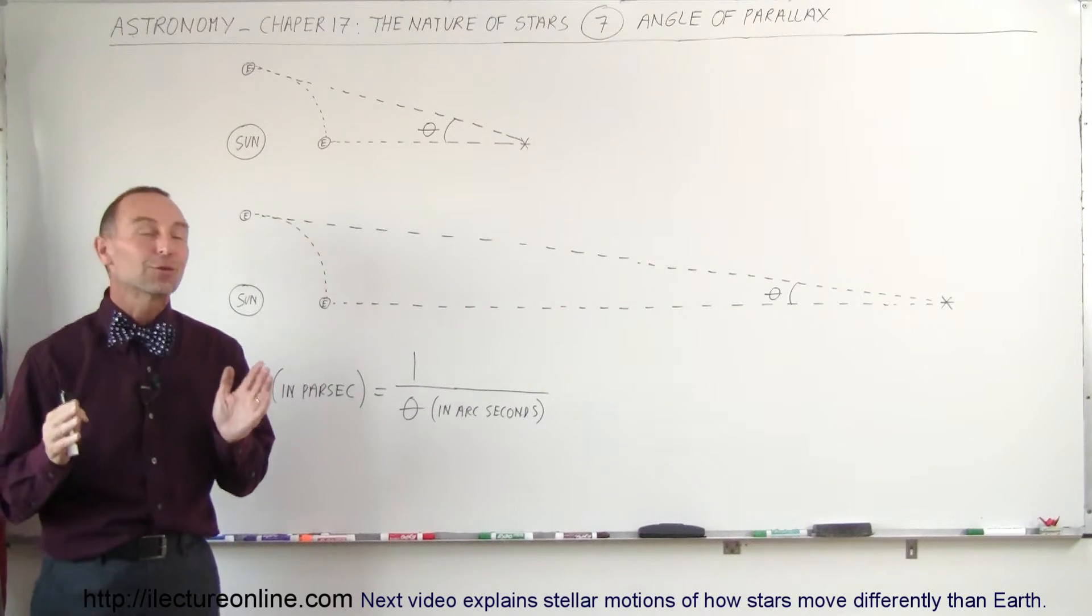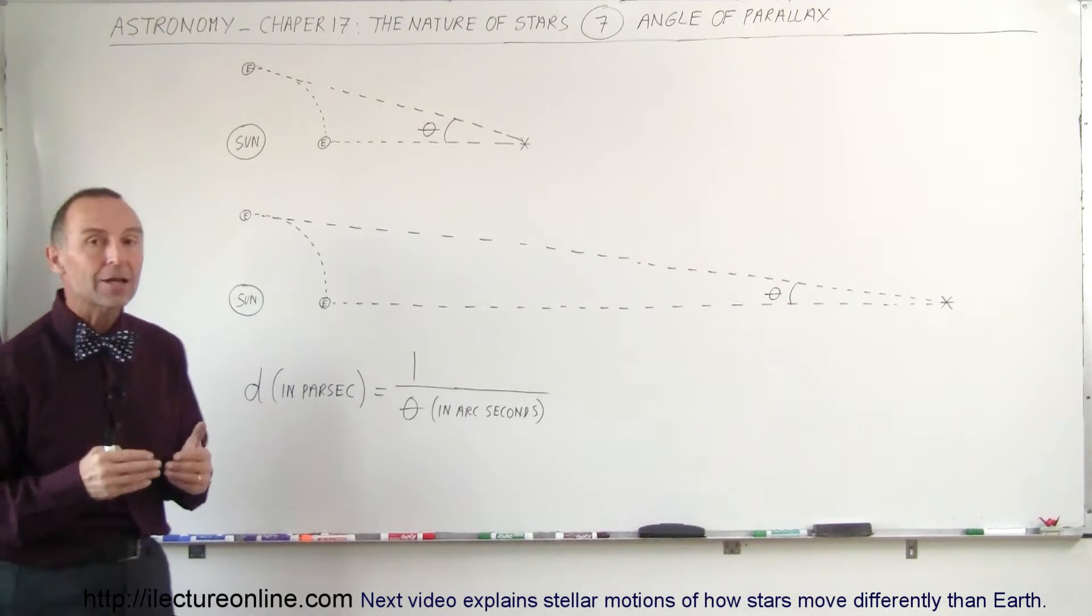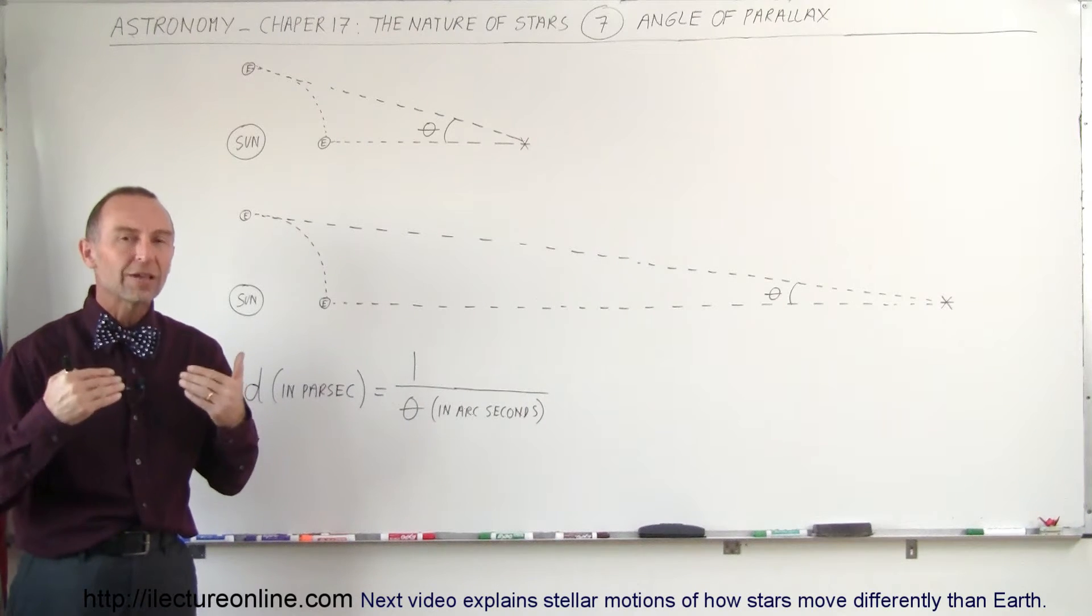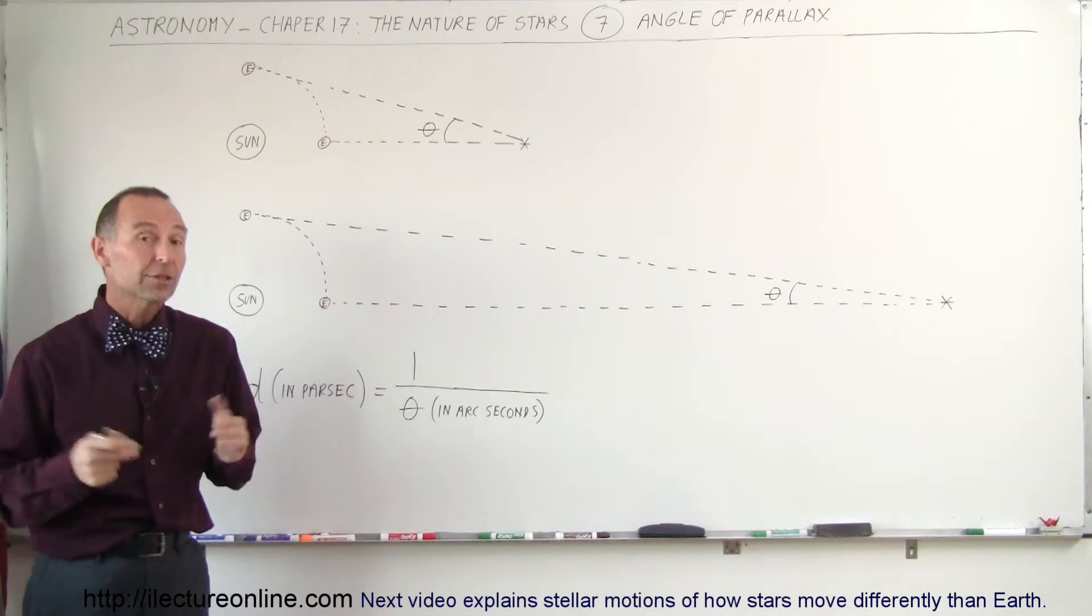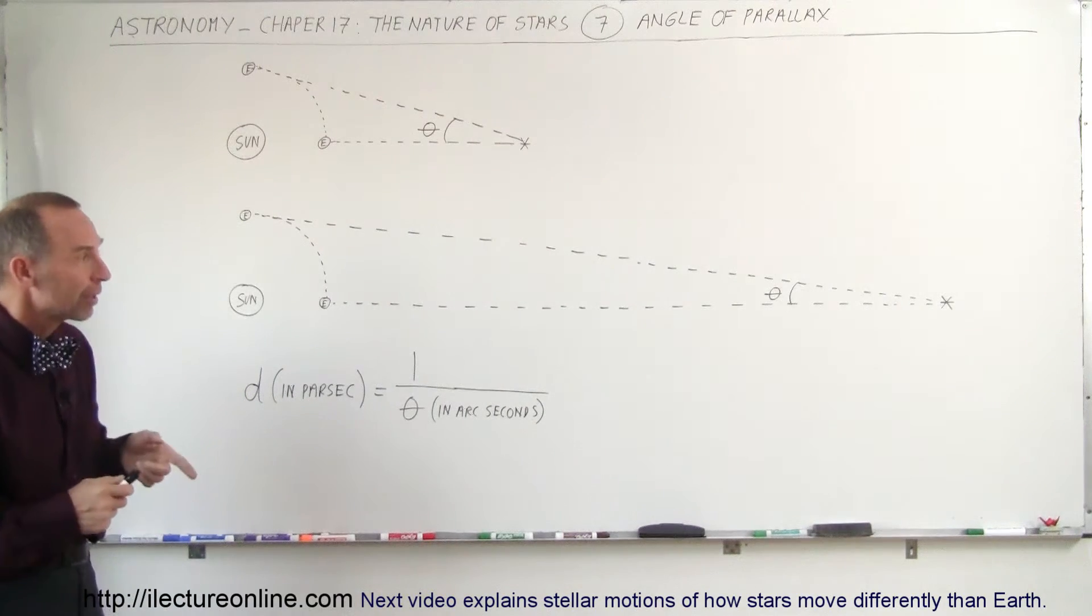Welcome to ElectronLine and now we're going to look at what we call the angle of parallax. One of the ways that we're able to figure the distance to stars, before we had really any other method, was called the angle of parallax.